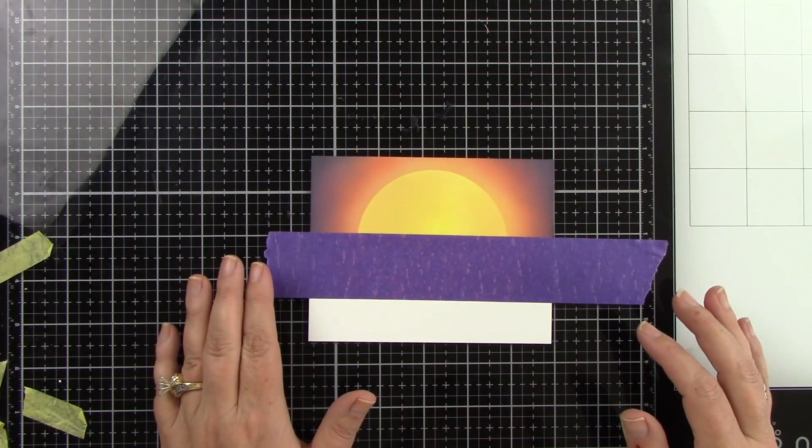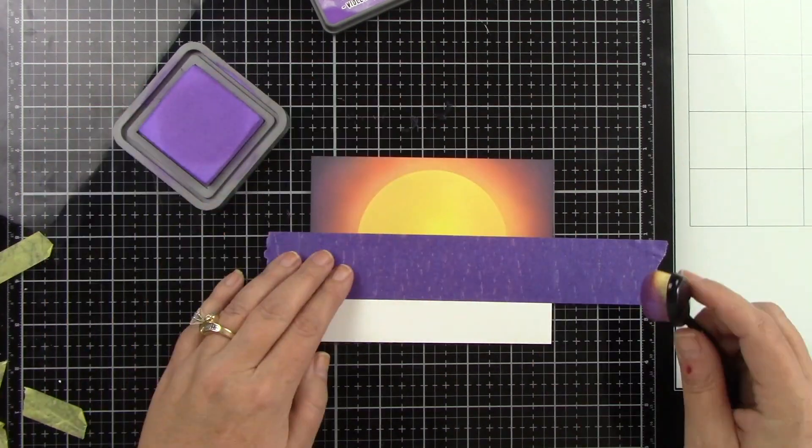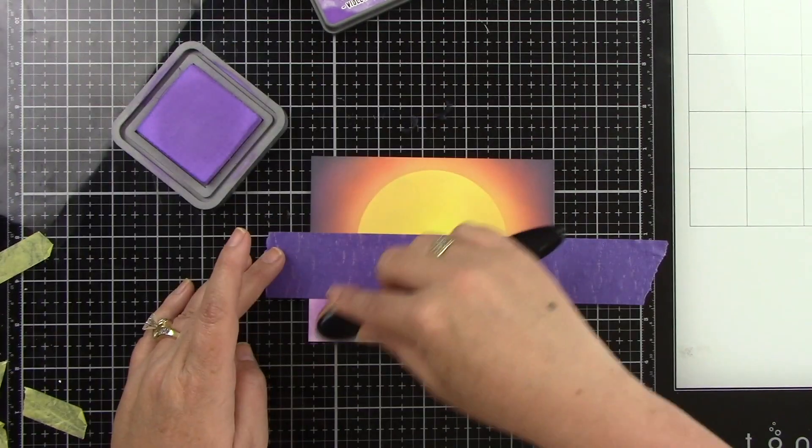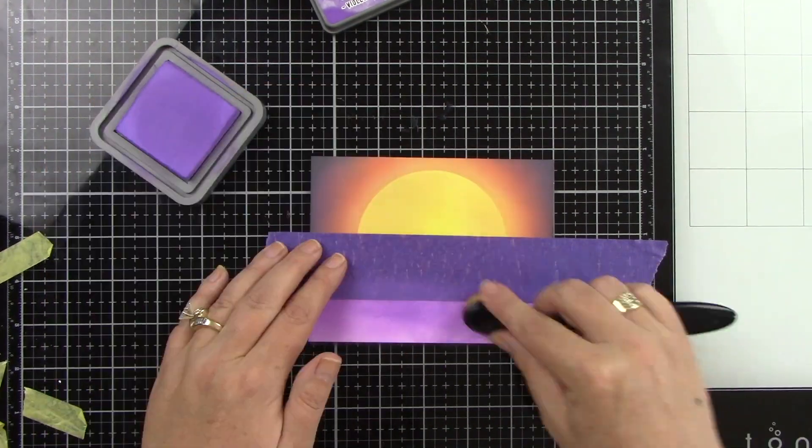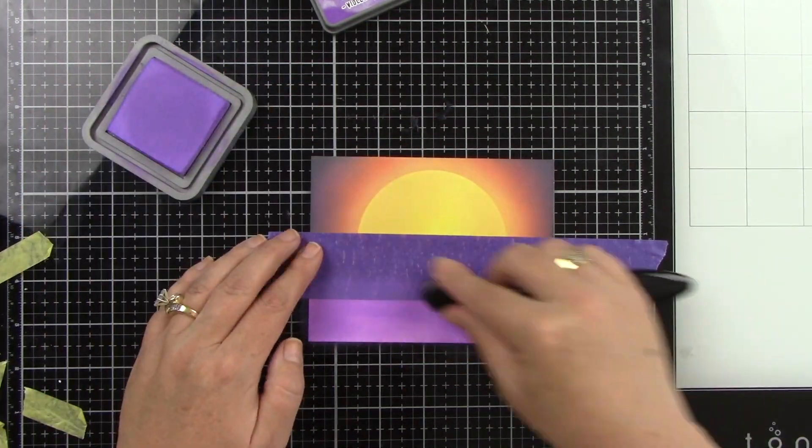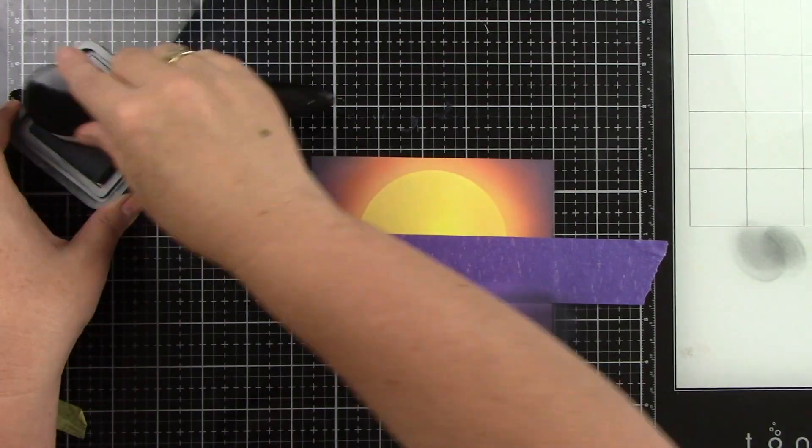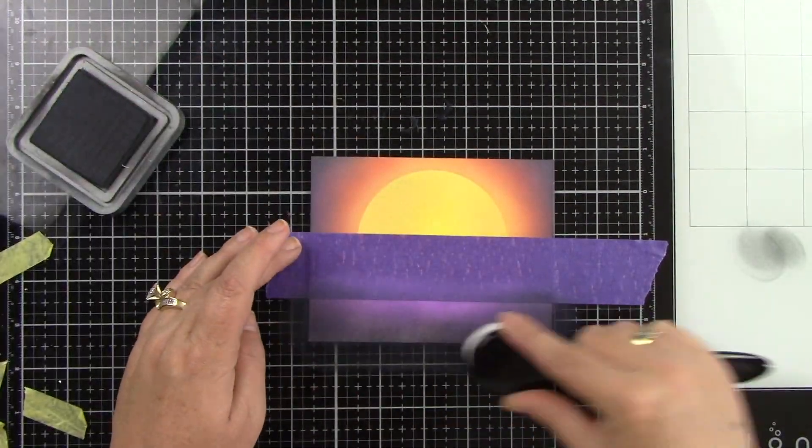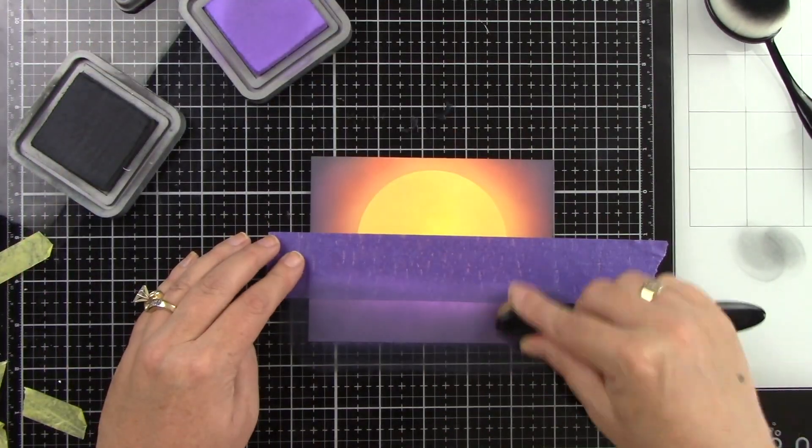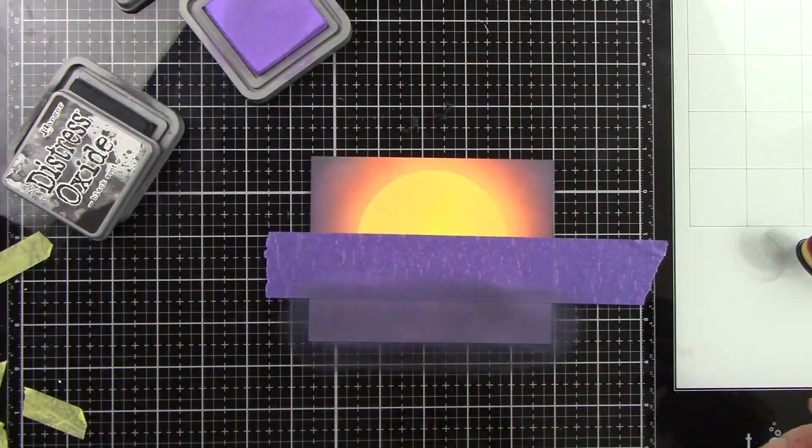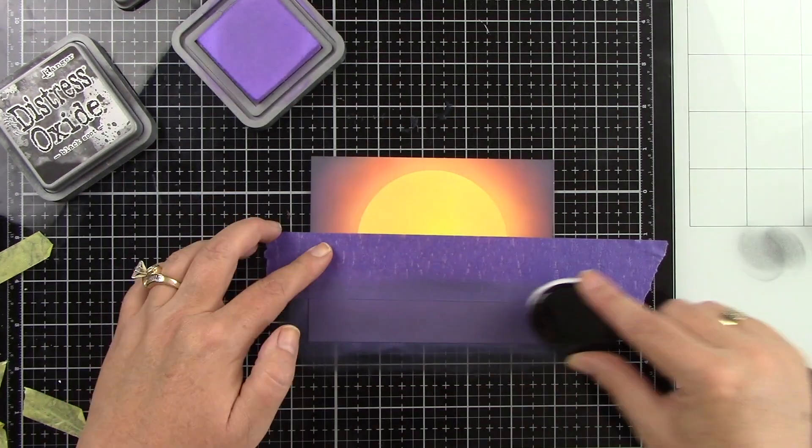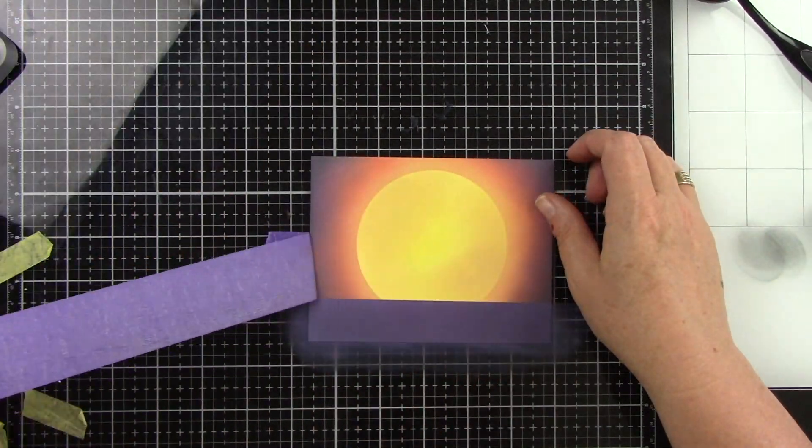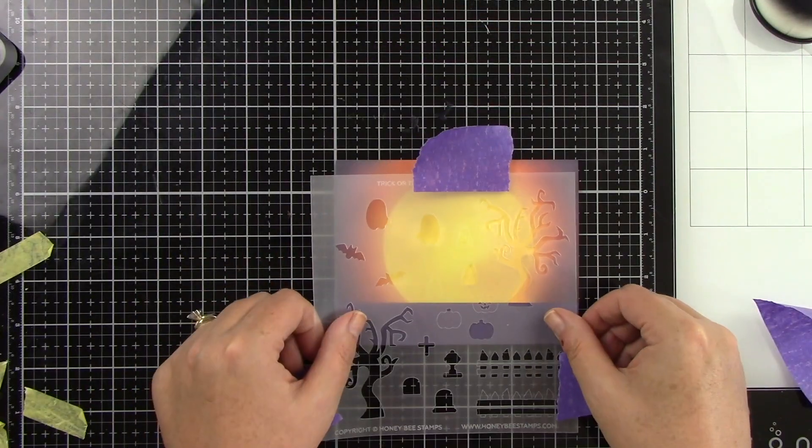Now I'm going to tape off the ground area and I will be using wilted violet and black soot. I want this to not just be a straight black background, but a very purpley black background. Because we're going to be using the trick-or-treat coordinating stencil, those images are all going to be in black. So I wanted the ground to look a little bit different than the stenciled images that we are going to be laying down. When you peel that back, you can see all of that purple.